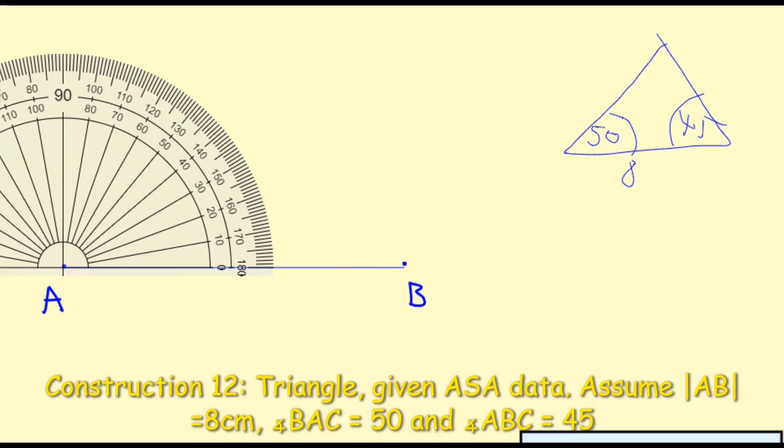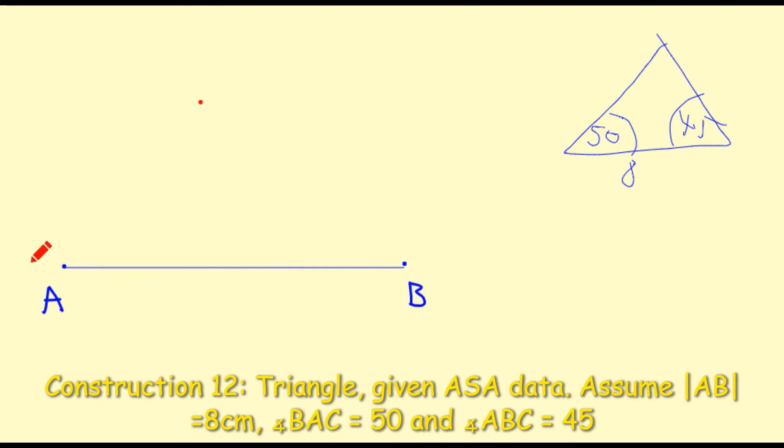I'm going to put a dot at 50 degrees which is the acute angle and I'm basically now going to get my ruler and I'm going to connect that point A to the point that I've drawn the dot on.